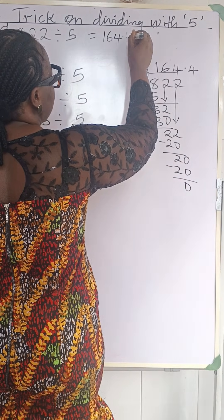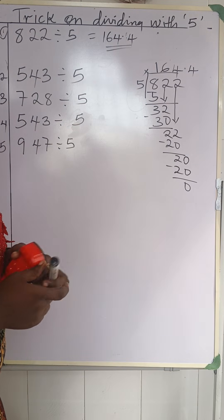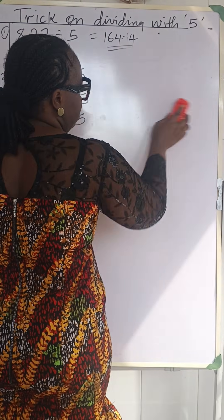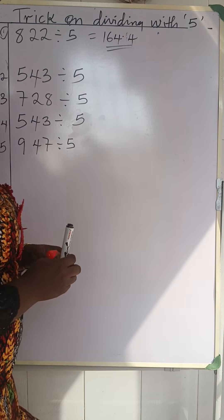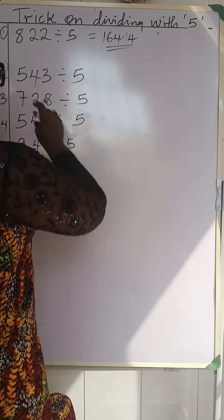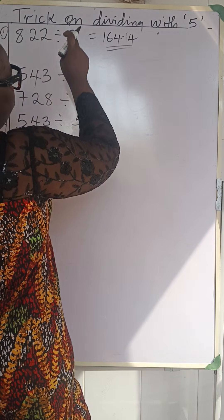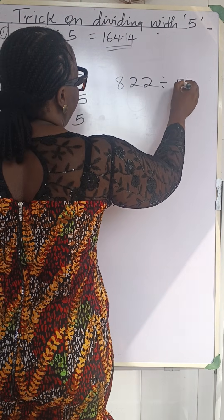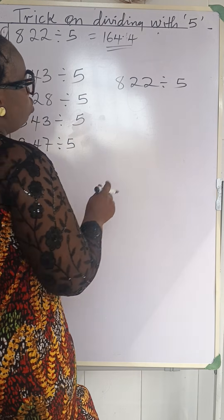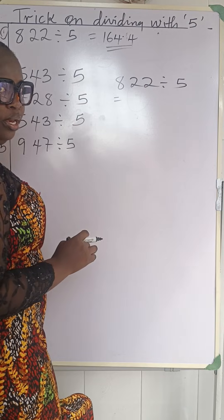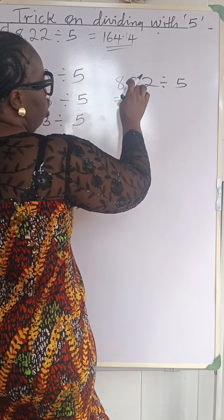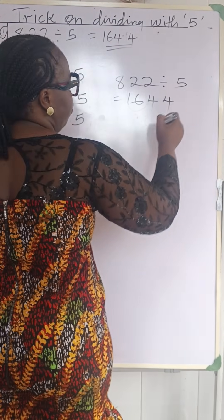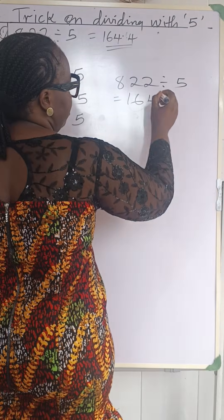164.4 is our final answer. Now let me show you a trick that is very fast, especially for objective questions. We have 822 divided by 5. What do we do? We just double each digit: double 8 is 16, double 2 is 4, double the second 2 is also 4 — and you put the decimal point here. Check these two answers — you get the same result!